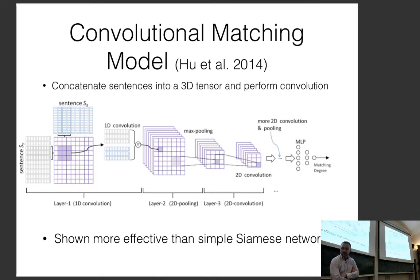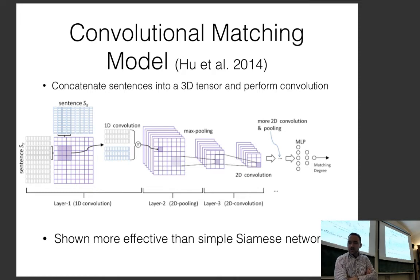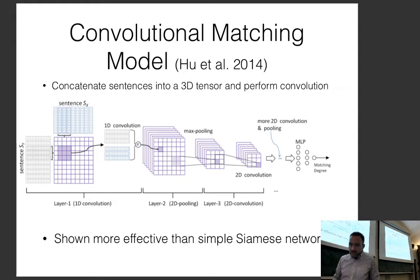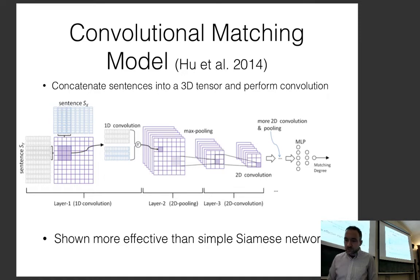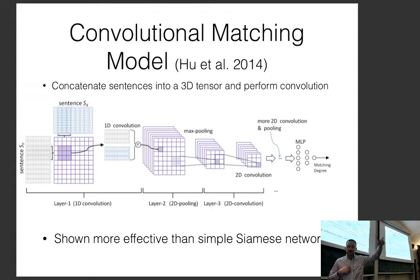There are more complicated methods using convolutional networks. One example is the convolutional matching model, which combines sentences into a 3D tensor and performs convolution over them. You have sentence SX and sentence SY, and each point in the matrix is the concatenation of features from sentence SX and SY. So row one, column one would be vectors from the first word in SX and the first word in SY; row two, column one would be the second word in SY and the first word in SX, and so on.